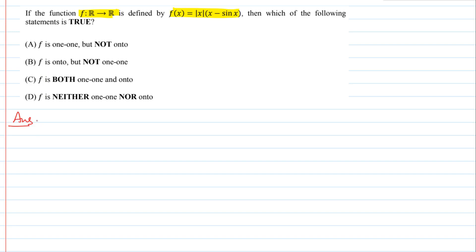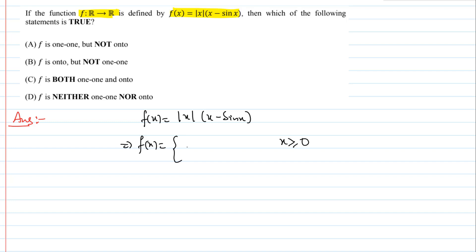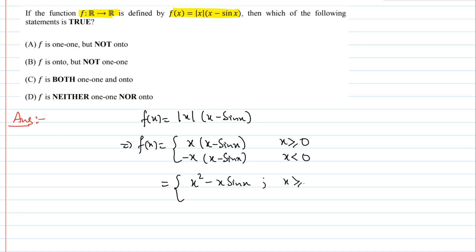हम लोग इस सवाल को करते हैं। हमारे पास function given है f(x) = |x|·x − sin(x)। तो अब हम लोग इस function को break कर लेंगे। Mod दो part में break होगा — x ≥ 0 के लिए positive sign के साथ: x·x − sin(x) = x² − x·sin(x), और x < 0 के लिए negative sign के साथ: −x·x − sin(x) = −x² + x·sin(x)।